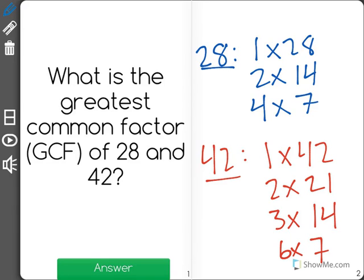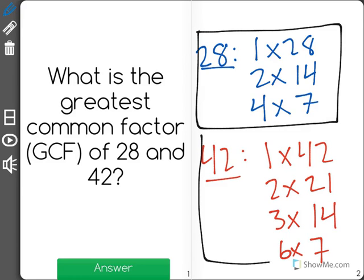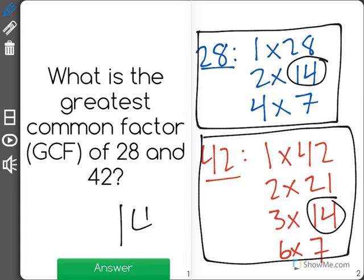Now what we're going to do is find the greatest number that both of these have. As you could tell, all of these numbers we have listed are factors. We're going to find the greatest factor that they have in common. And as you could see, that factor is the number 14 for the correct answer.